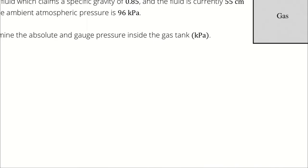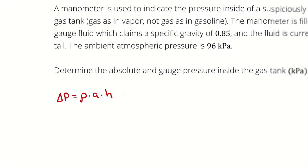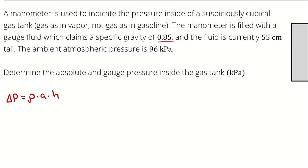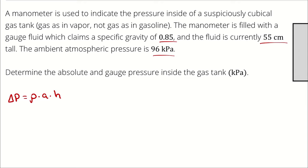The density of that fluid times the acceleration it's experiencing times height. The pressure difference across the height of the column of fluid is going to be the density of that fluid, multiplied by the acceleration it's experiencing, multiplied by its height. In this problem, we know the specific gravity of the fluid that will allow us to calculate its density. We know that the height of the fluid is 55 centimeters, and we know the atmospheric pressure.